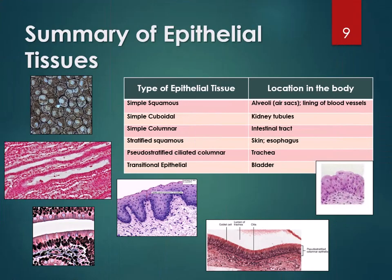Here are some examples of epithelial tissue: simple squamous is found lining the air sacs in your lungs; simple cuboidal is in the kidney tubules; simple columnar is in the intestines; stratified squamous is in your esophagus and skin; pseudostratified ciliated columnar is in the trachea; and transitional epithelium is in your bladder. If you want more images, just search 'histology epithelial tissue' in Google.